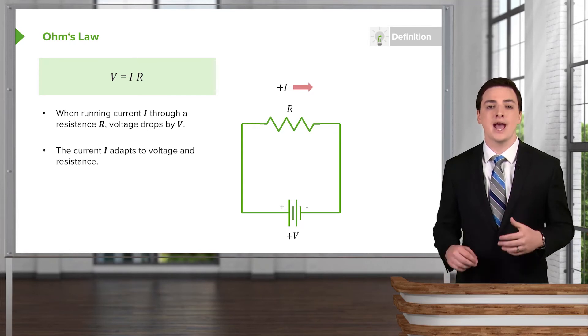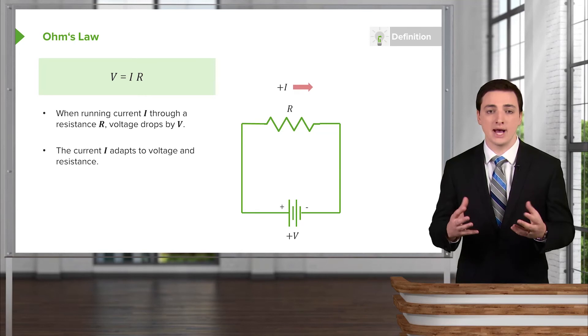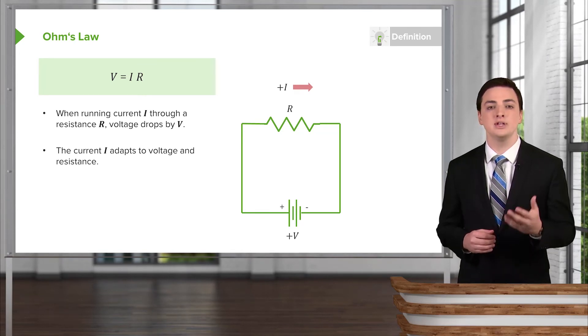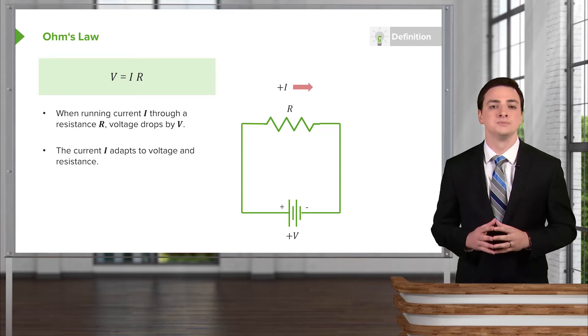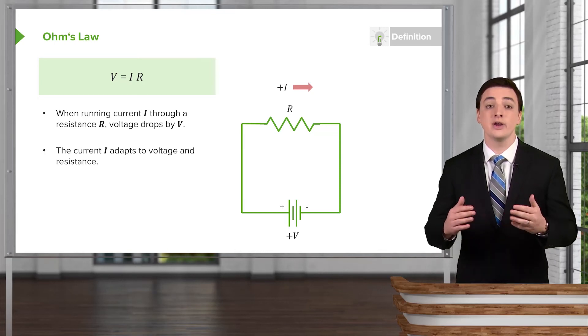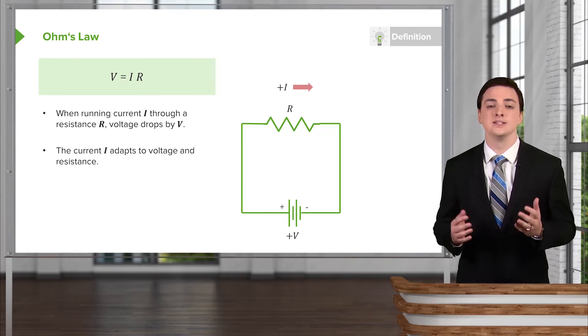In other words, for a given circuit we have some voltage—some pump, if you will, some actual battery—and we also have a given amount of resistance. Those are sort of fixed physical quantities, which means the variable that can adapt to the physical situation is the current.